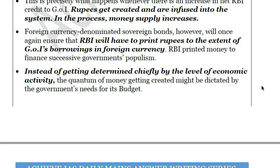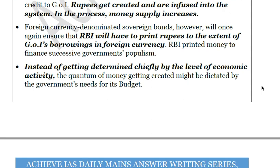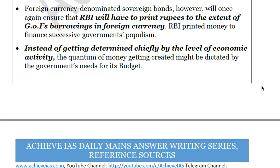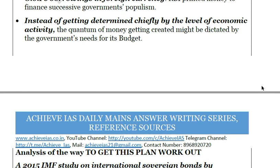Instead of being determined chiefly by the level of economic activity, the quantum of money will be dictated by the government's budget needs. The government will not just directly turn to the RBI but will indirectly turn to the RBI by borrowing externally and then converting to rupees through the RBI. There will be no difference between this and the earlier fiscal policy which deteriorated India's macroeconomic indicators.